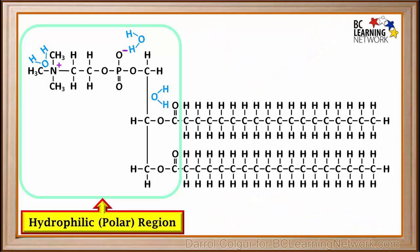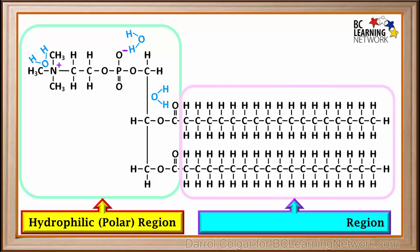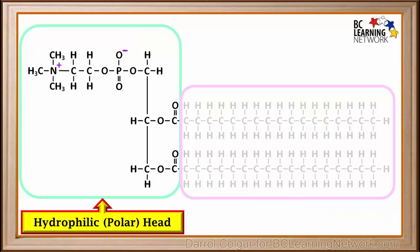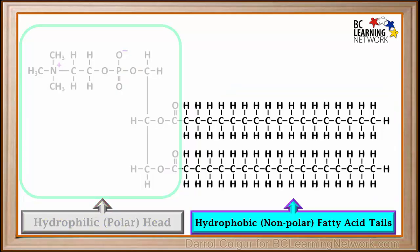The long chains of carbon and hydrogen atoms have no charges and they tend to repel water. Because this region repels water, or fears water, it is said to be hydrophobic. And because it has no charges or partially charged atoms, it is called nonpolar. This is also called the hydrophilic polar head, and these are also called the hydrophobic nonpolar fatty acid tails.